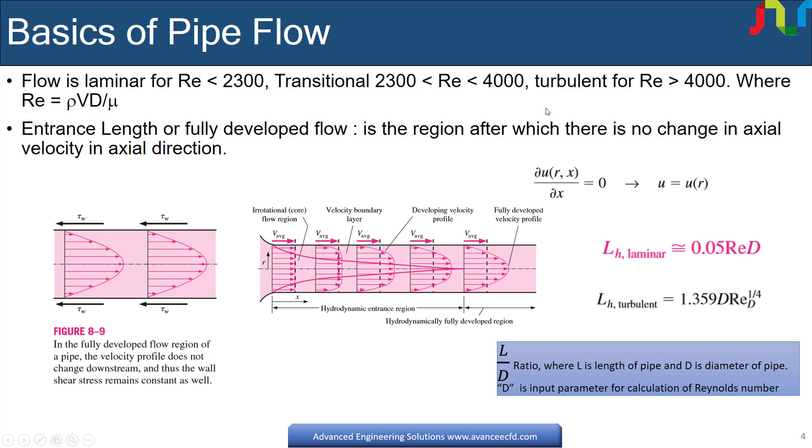We now discuss about the fully developed flow. A flow is said to be fully developed when there is no change in axial velocity along the flow direction. So the velocity profile does not change with length, but it is only function of radial direction. The region up to which velocity profile is changing axially is called hydrodynamic entrance region. After this, we have so-called fully developed flow.